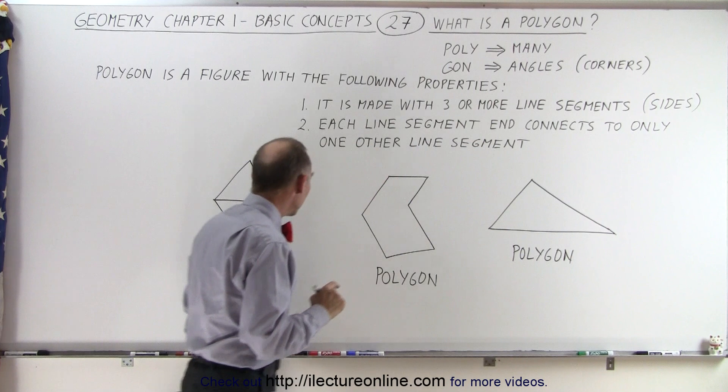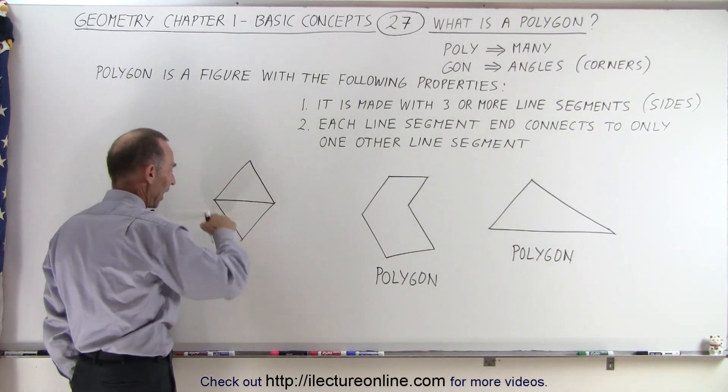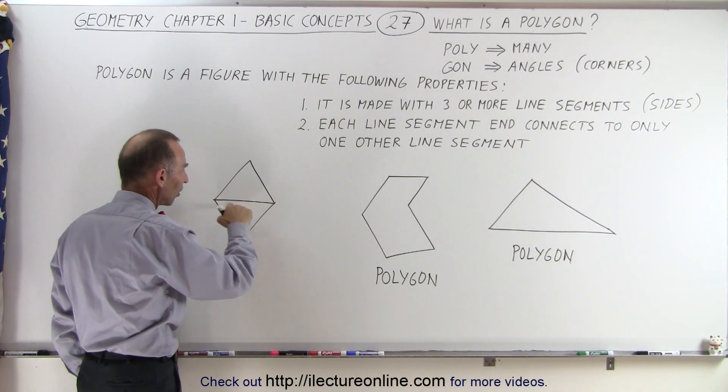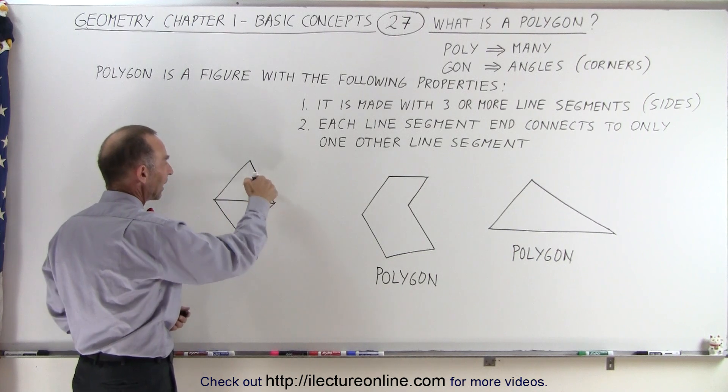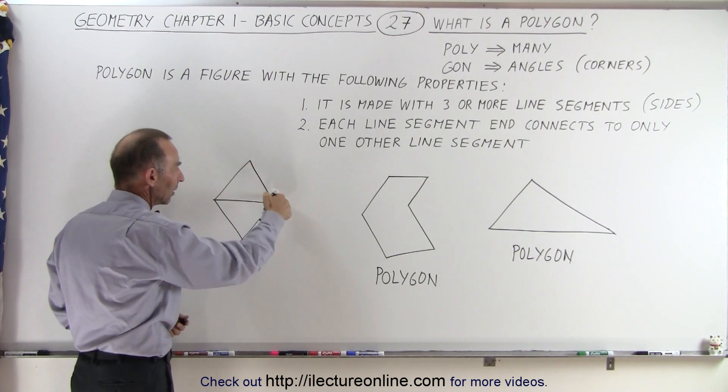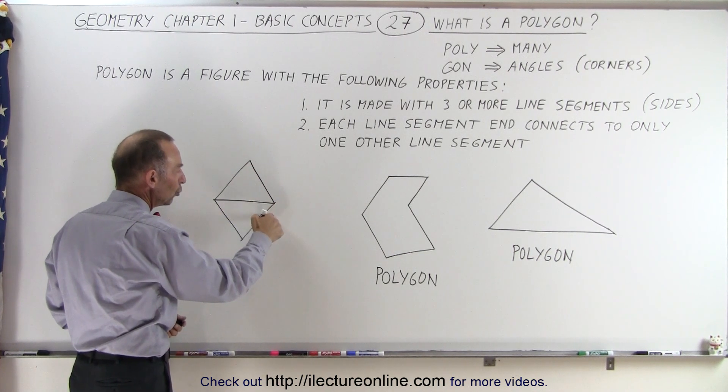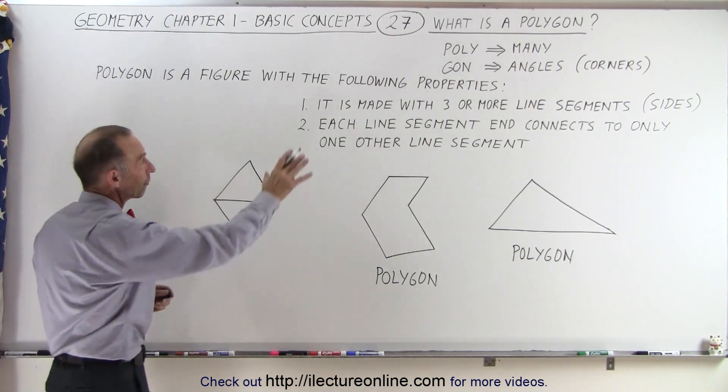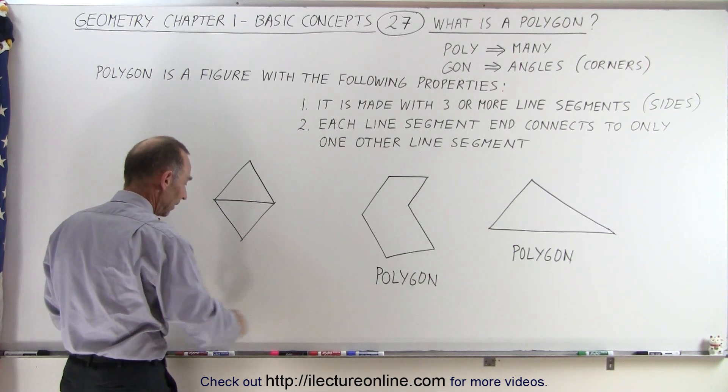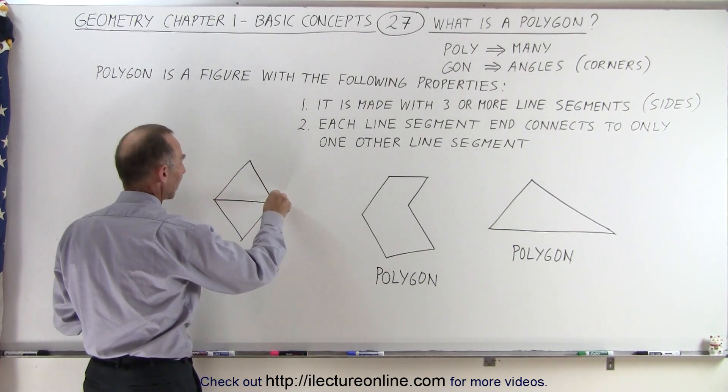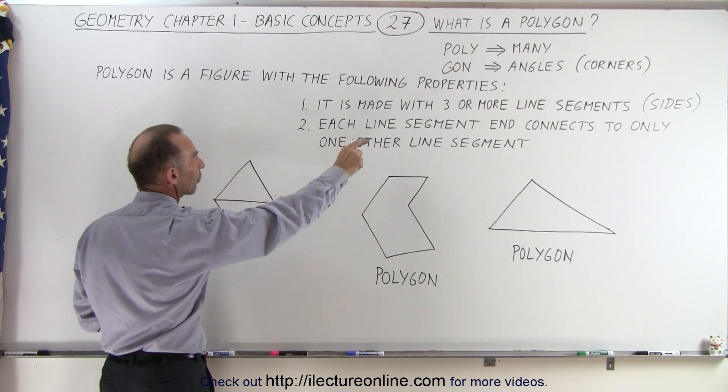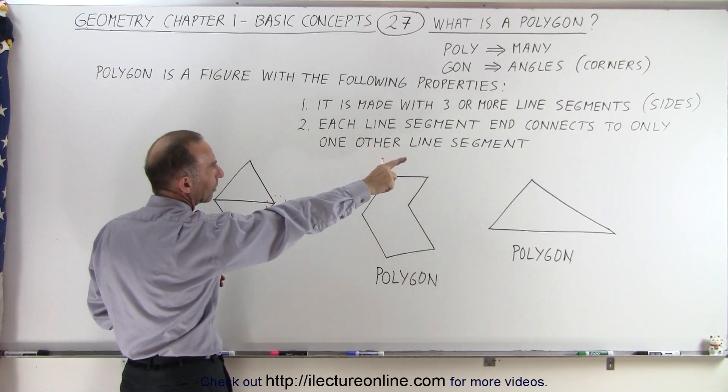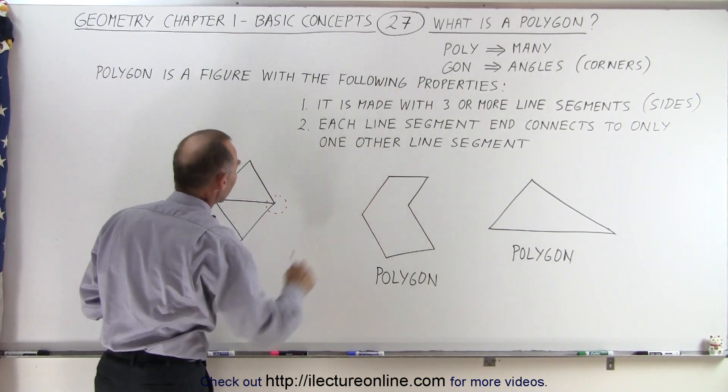But now when we take a look at this, sure this figure has four sides here, but then there's another line across here. So when I take a look at this side, this side is connected to two other lines or two other line segments that is violating the rules of a polygon. So because of that, right here, you can say that this does not satisfy the rule where each line segment end connects to only one other line segment.